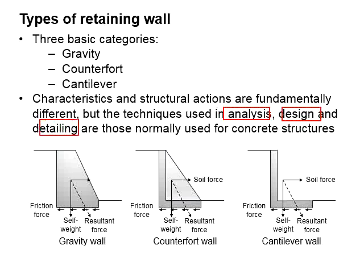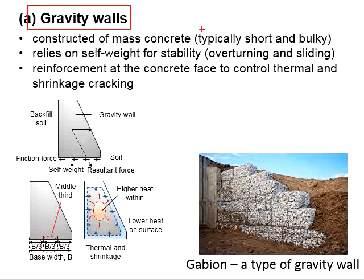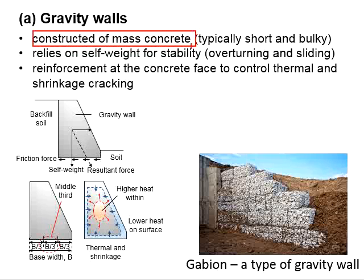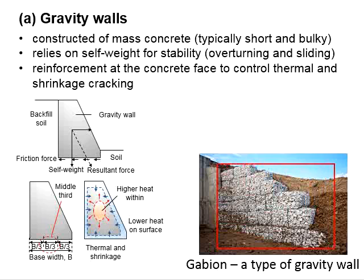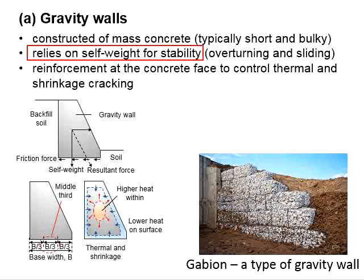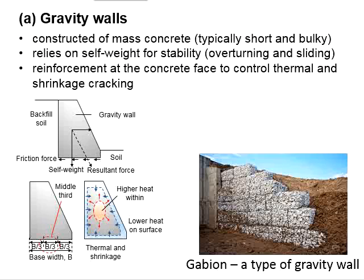The gravity wall is normally short and bulky. It is normally constructed using concrete of large mass or some other material of heavy weight. The gravity wall relies on its self-weight for stability, resisting overturning and sliding. It is designed to be short and bulky to lower the centre of gravity and prevent overturning. Its heavy weight leads to high frictional force to control sliding.